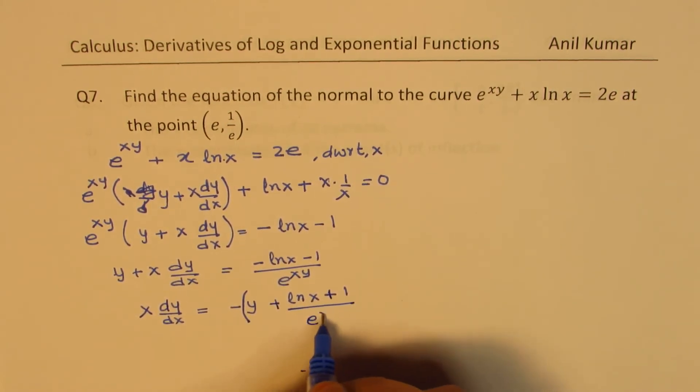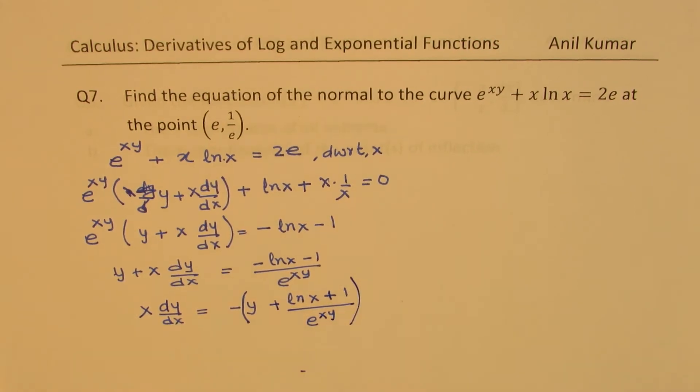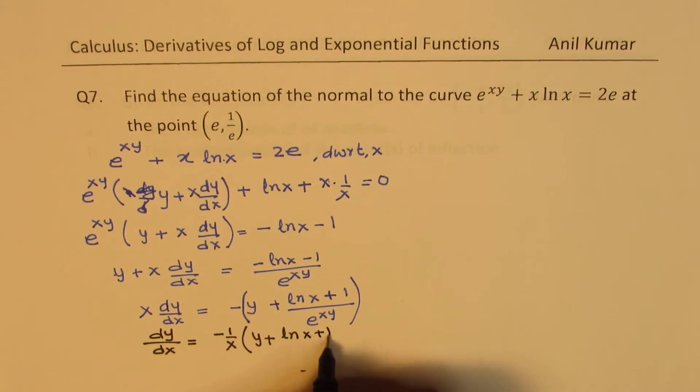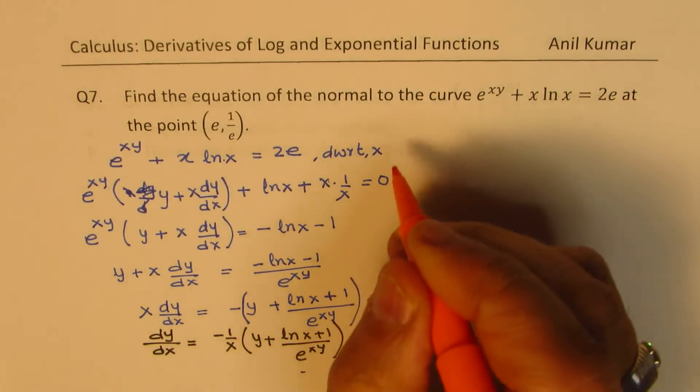This divided by e^(xy). So now we can write the derivative dy/dx as equal to -1/x times (y + ln(x) + 1) / e^(xy). So that becomes the derivative.